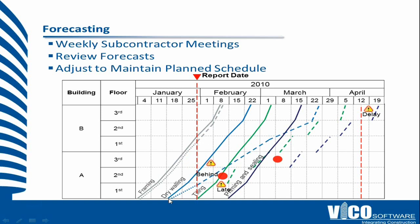However, the drywalling guy isn't achieving the production. This deviation, if we don't do something about it, is going to cause problems for the tiling guy and make him discontinuous. This in turn is going to cause problems for the priming and sealing guy, who will also become discontinuous. Overall, we're going to have a forecast delay shown by the dashed lines.